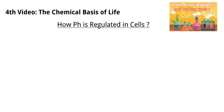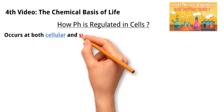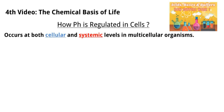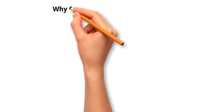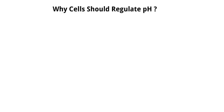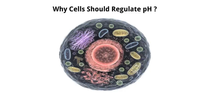pH regulation occurs at both cellular and systemic levels in multicellular organisms. First, why should cells regulate their pH value? Let us assume that pH is not regulated appropriately in cells — so what can we expect to see in these cells?